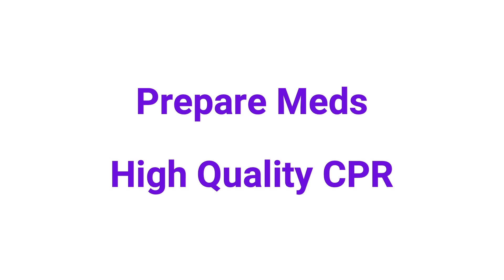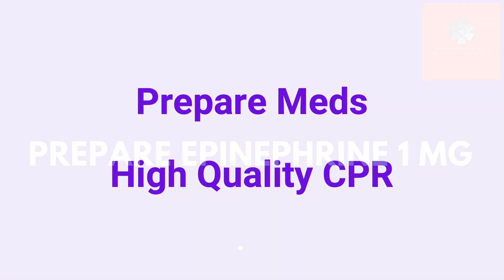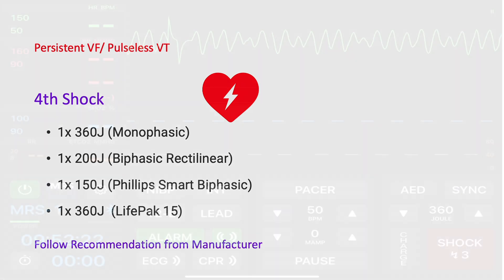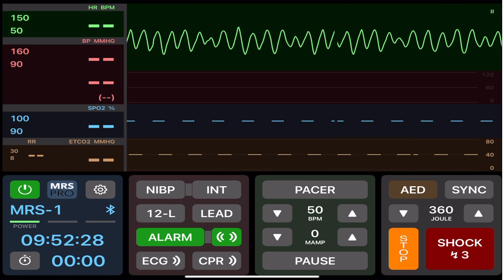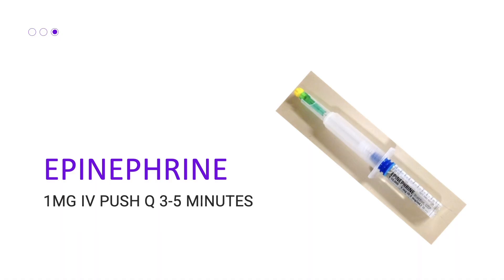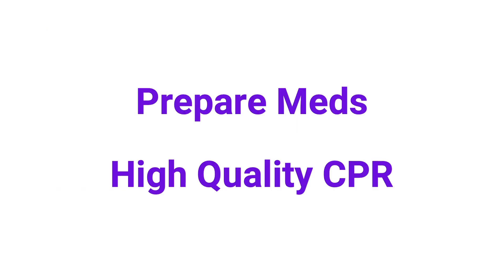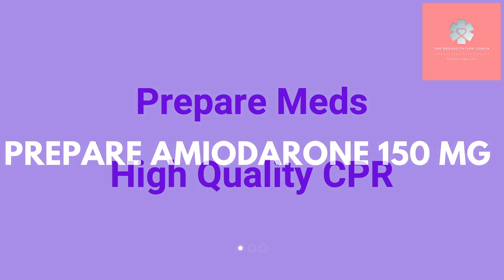Start thinking about our next medication, which would be epinephrine — start preparing it and monitor your CPR quality throughout. After two minutes, stop, switch, and analyze. If it's still VF, give defibrillation number four, follow the manufacturer's recommendation, and resume high quality CPR. Give the epinephrine prepared earlier: one milligram IV push — again, repeat every three to five minutes. Start preparing the next medication, amiodarone, and continue CPR quality monitoring.